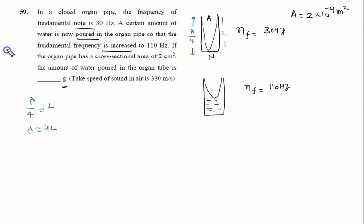Fundamental frequency by the formula V = fλ is written as V upon lambda. V is 330 m/s, lambda is 4L, and frequency is 30 Hz. So we calculate the length as 11/4 meters.